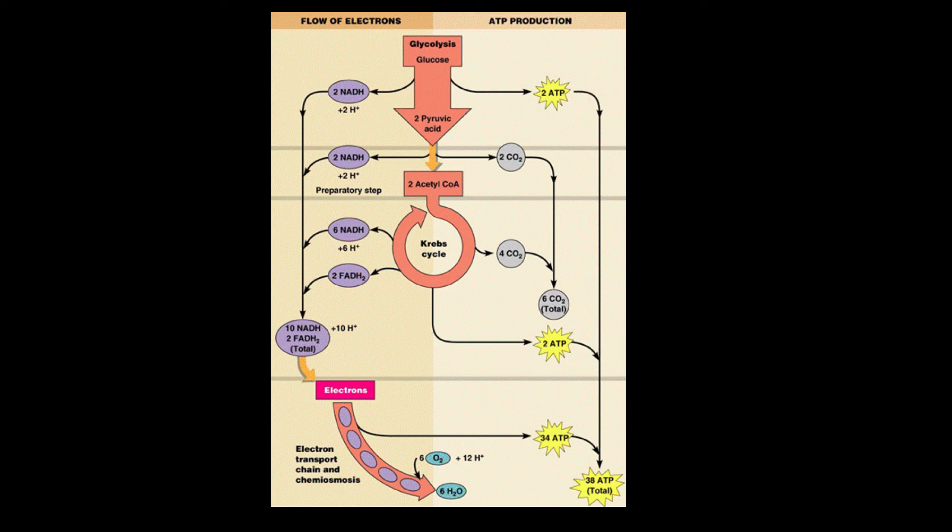All of the electron carriers are going to feed into the electron transport chain. We're going to have 10 NADH that are going to feed in, and we're going to have two FADH2 that are going to feed in.